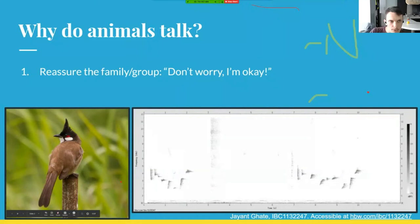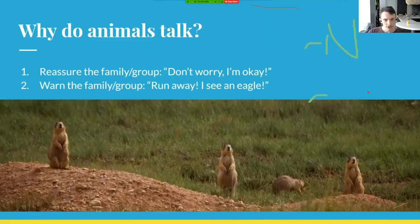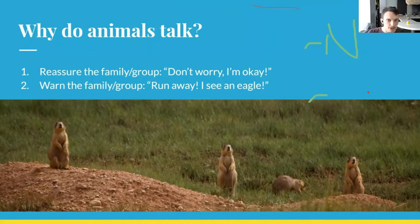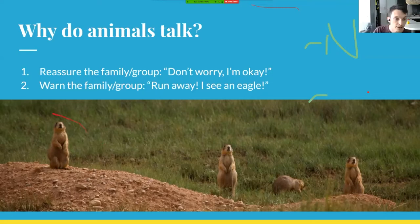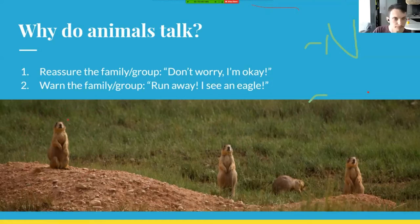When these animals are talking, one of the things they're saying is 'don't worry, I'm okay.' But you also need the opposite — instead of saying I'm okay, they're saying 'run away, I see a predator, there's a snake nearby.' Families will often warn each other when there is a predator nearby. This is quite dangerous because if you're making a noise, you make yourself visible to other predators or to the predator you're warning everybody else about. But usually if they're in a family group, it's worthwhile.